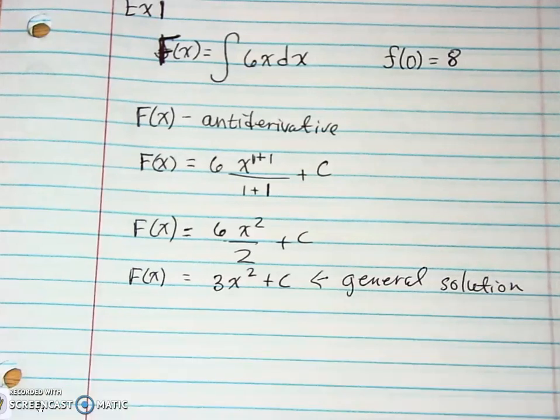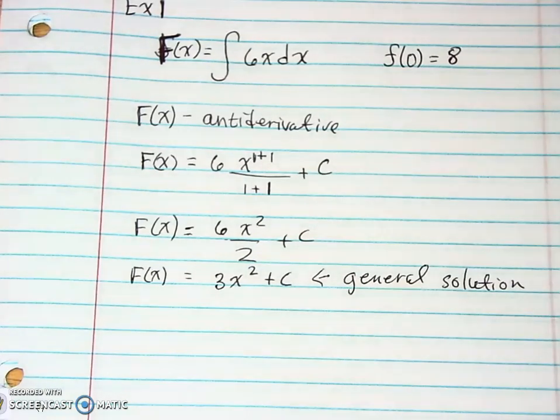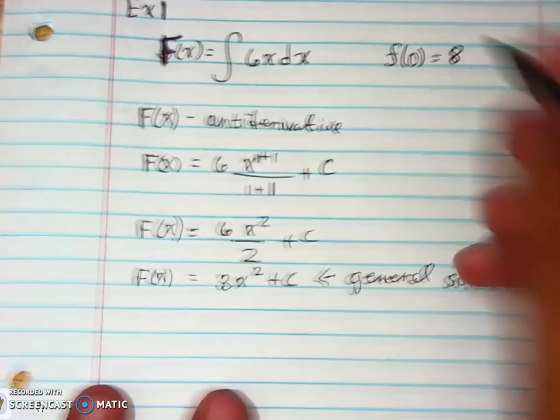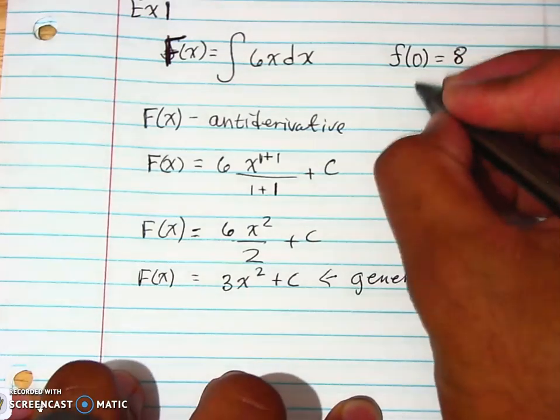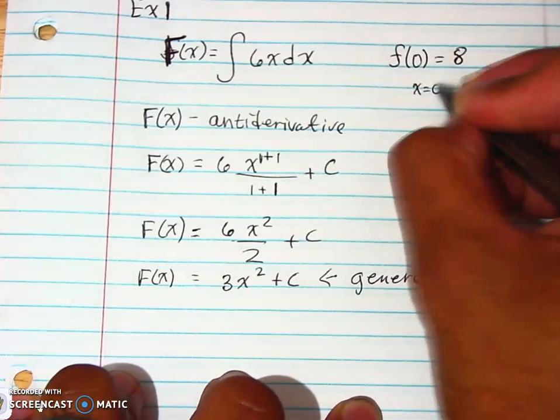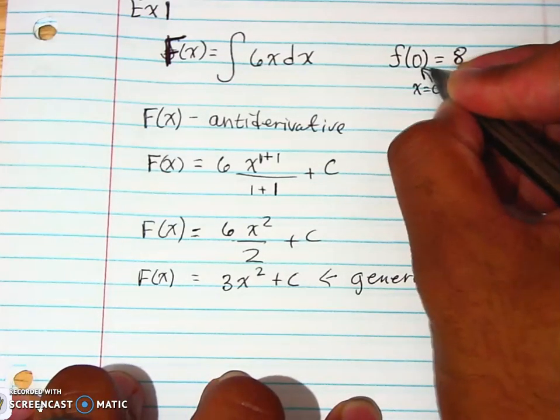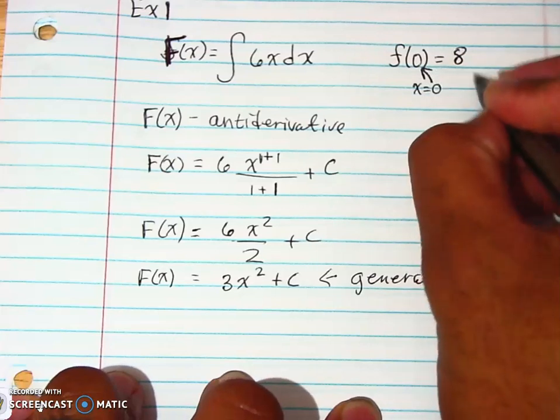Now, let's go ahead and find our actual particular solution using our initial value right here. As a reminder, we're talking about f of x equals a number. That means here x is equal to 0 because I'm going to have the f of x portion right there. And that means this is your y value.